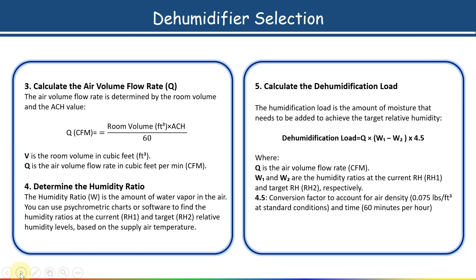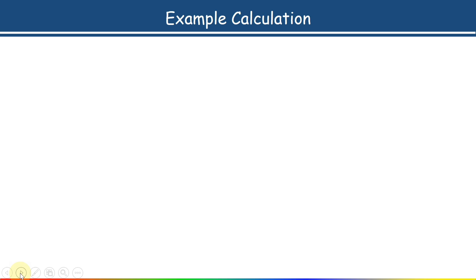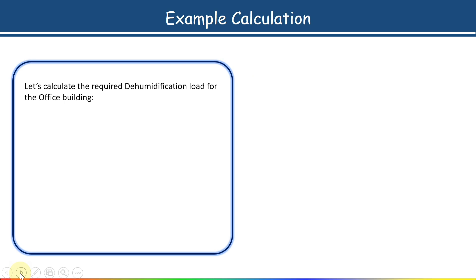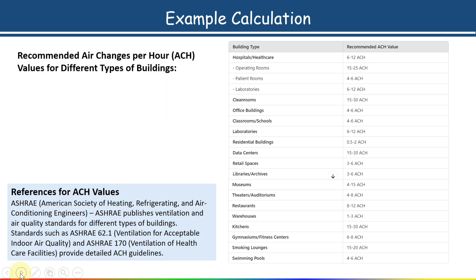Now I will show you an example calculation so you can easily understand how to select and size the dehumidifier. Let us calculate the required dehumidification load for an office building. The room volume is 15,000 cubic feet. The air changes rate for an office building — from the table, the recommended range for office buildings is 4 to 6 air changes per hour, meaning in one hour the air can be changed 4 to 6 times.